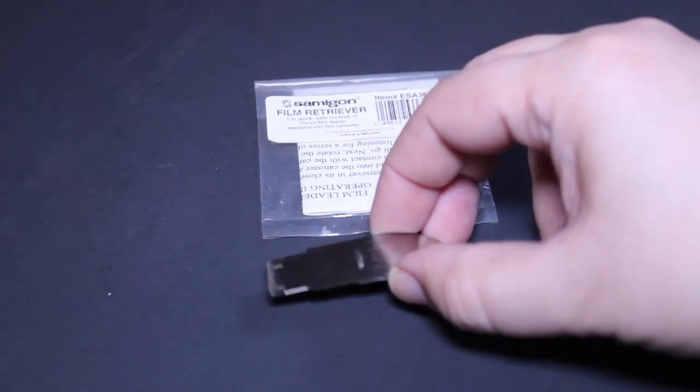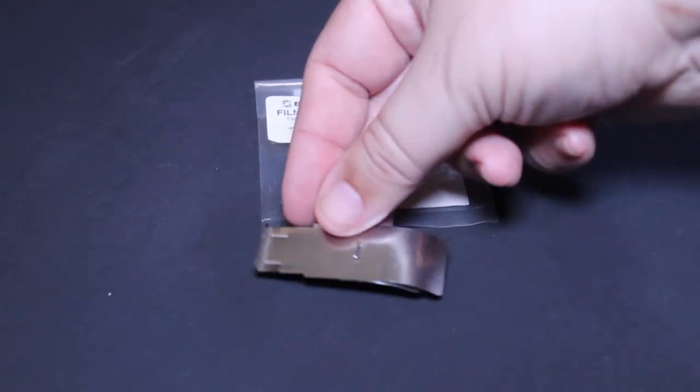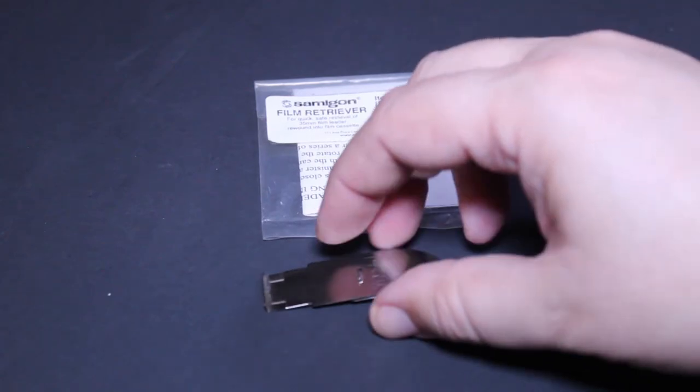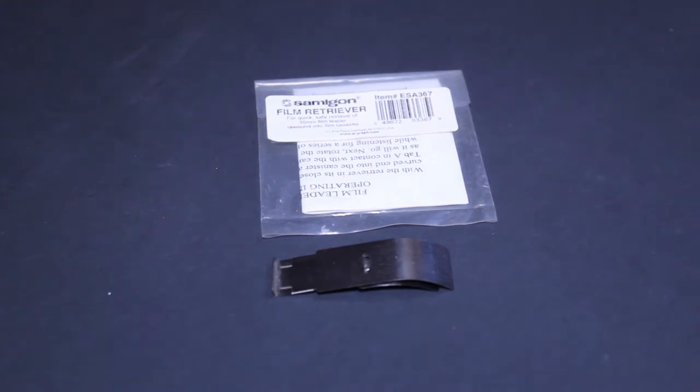As you can see, it's this very basic little piece of metal, kind of like this little clip. We see one end is curved, the other end has a little tab on it, and I'm going to demonstrate to you how this little film retriever works.